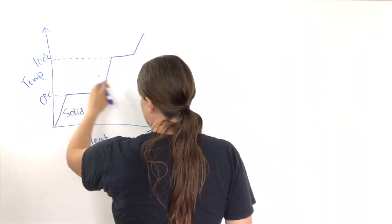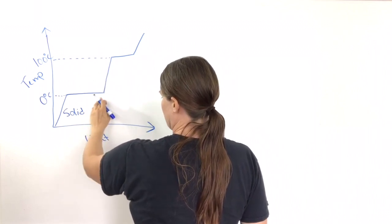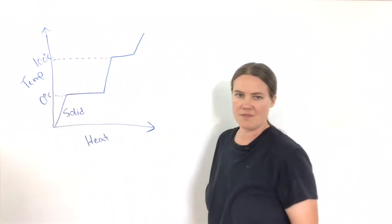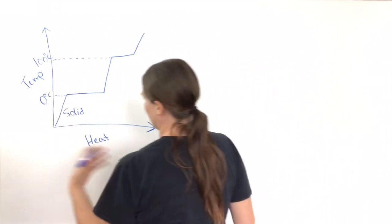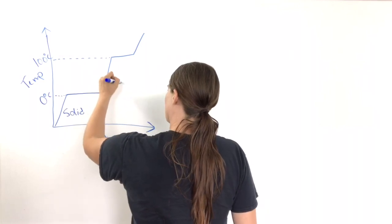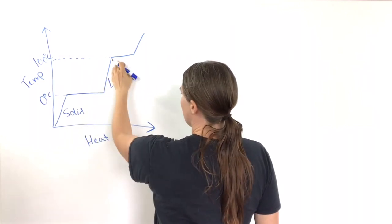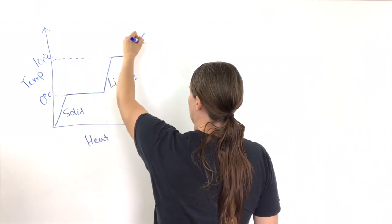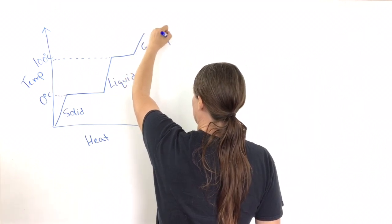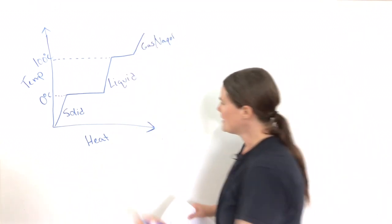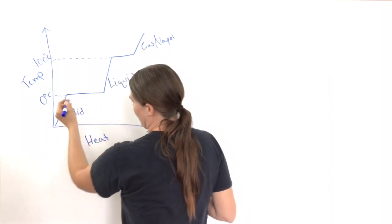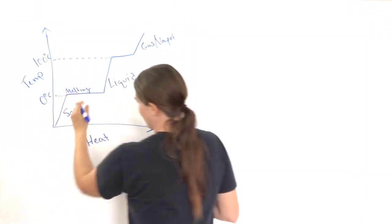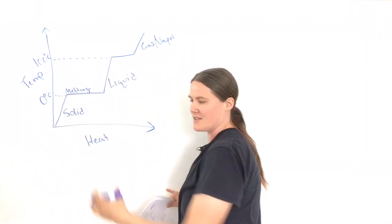If you're on this portion of the curve, you go from a solid to a liquid. If you're between zero degrees and 100 degrees Celsius with water, you have a liquid here. And then, if you go over 100 degrees, you have a gas or vapor. This straight line represents the melting point if you're increasing your temperature.